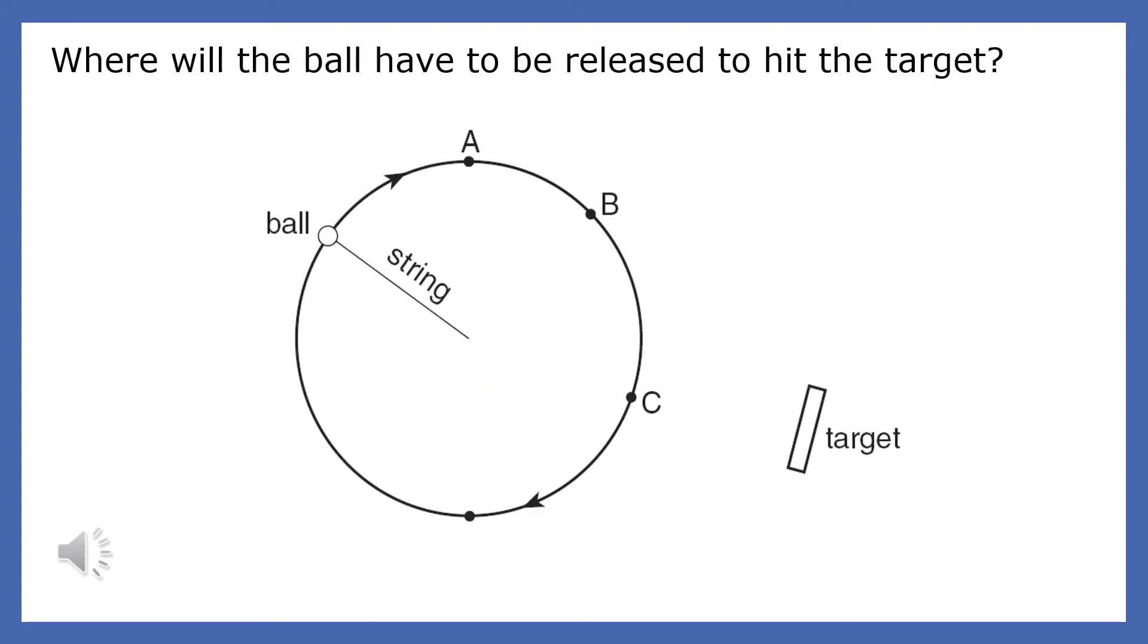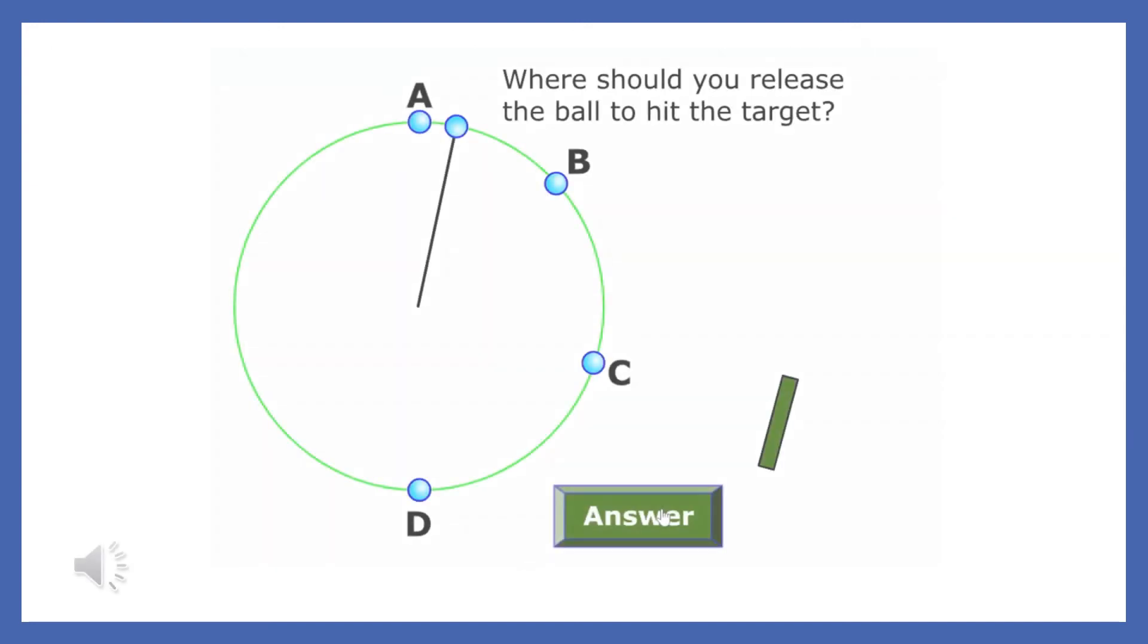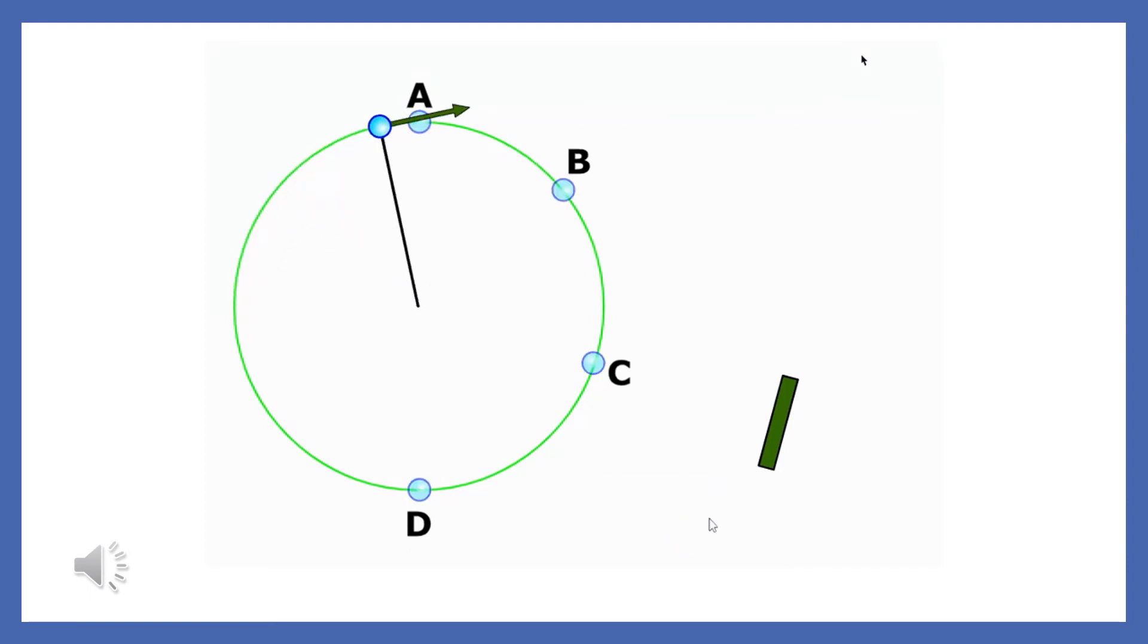This ball is attached to a string and moving clockwise. At what point A, B or C would the string have to be released for the ball to hit the target? The string holding the ball should be released when the ball reaches point B. At that point, the ball will move tangent to the circle and hit the target.